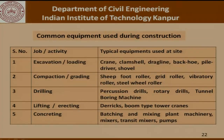For excavation or loading it could be cranes, clamshells, draglines, backhoe, pile drivers, shovels and so on. For drilling it could be percussion drills, rotary drills, or a tunnel boring machine. For concreting you have batching and mixing plant machinery, mixers, transit mixers, pumps, vibrators and so on. Here is an example of two types of equipment — the backhoe and the derrick crane — used for excavation works, manufactured by companies such as JCB, with illustrative costs given.